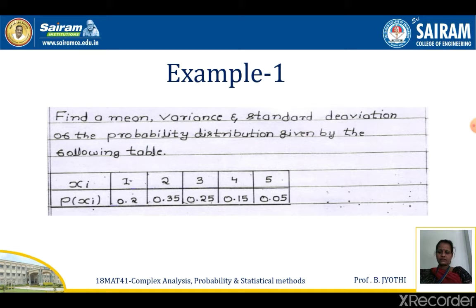Let's see an example. Find the mean, variance, and standard deviation of the probability distribution given by the following table. xi gives 1, 2, 3, 4, 5 and p(xi) gives 0.2, 0.35, 0.25, 0.15, and 0.05.